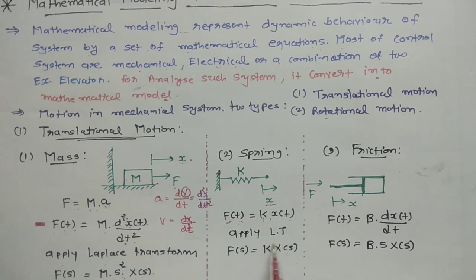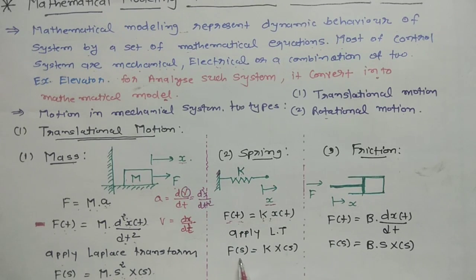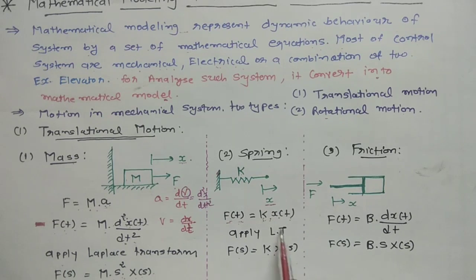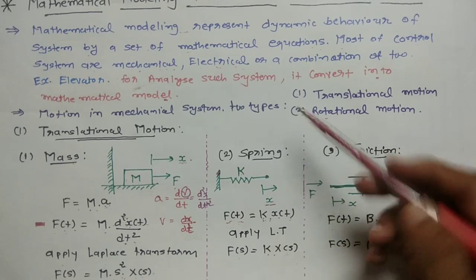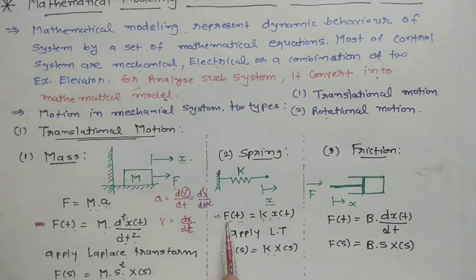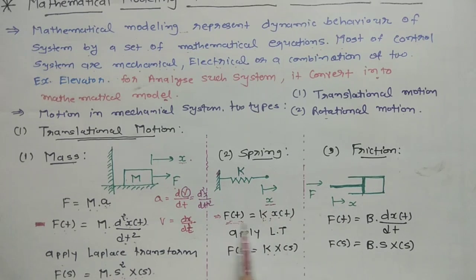Now applying the Laplace transform to the spring equation, we can write: F(s) = K · X(s), since x(t) converts to X(s). That is the Laplace transform result. So the main equation for the spring force is: F(t) = K · x(t).